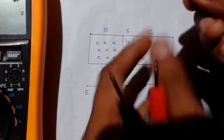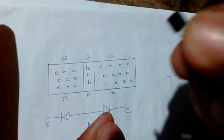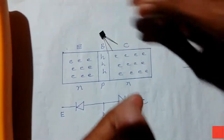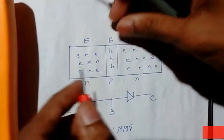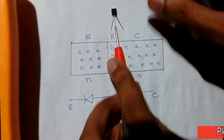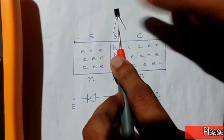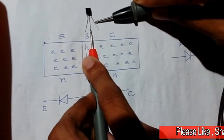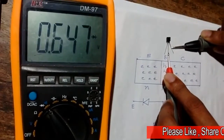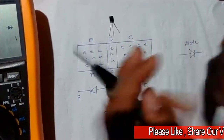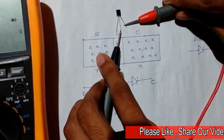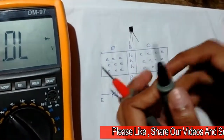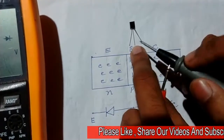Let's take an NPN transistor — this is a BC547. I will keep the positive terminal of the multimeter at the base terminal and the negative terminal at another pin. You can see there is a voltage drop on the DMM of 0.47. If we now reverse the multimeter probes, you can see there is an open circuit.